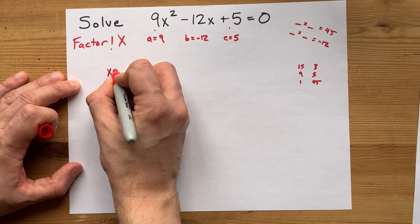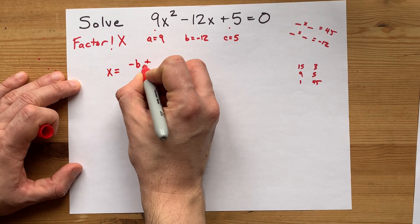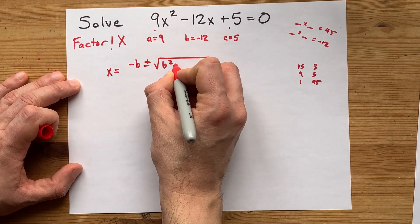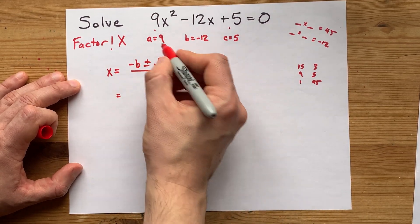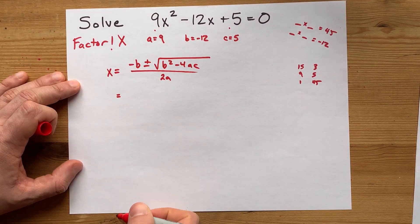The quadratic formula is negative B plus or minus the square root of B² minus 4AC all over 2A. And your job then is to just plug all these numbers into this formula.